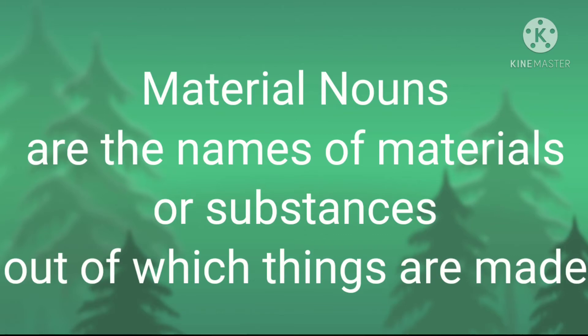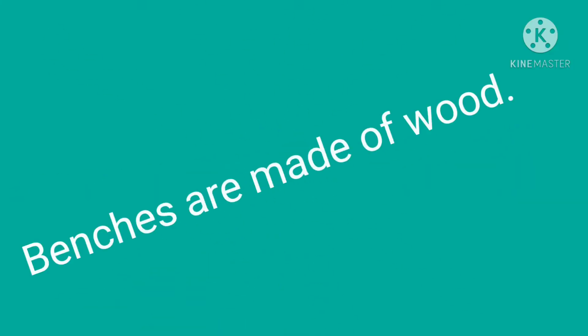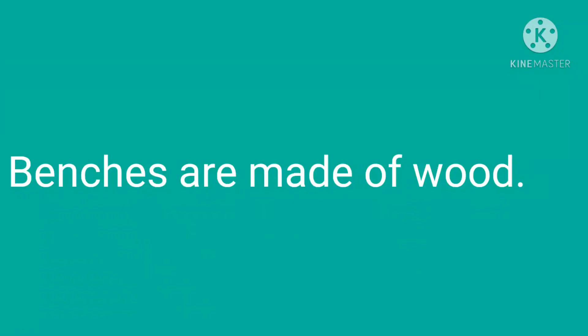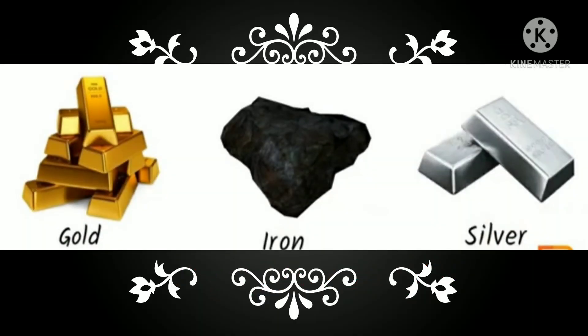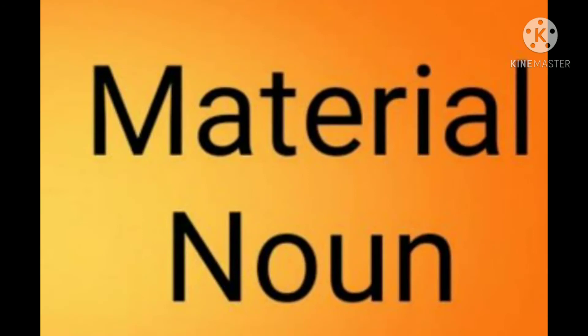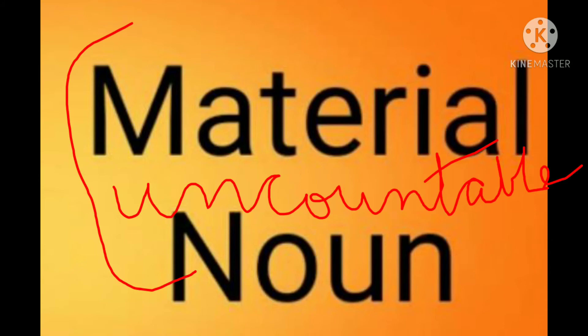Next is material noun. Material nouns are the names of materials or substances out of which things are made. For example, the benches are made of wood — so wood is a material noun. Next examples are gold, iron, silver — these are examples of material noun. Material nouns are uncountable nouns, kyunki inhe hum count nahin kar sakte.